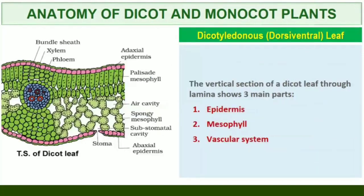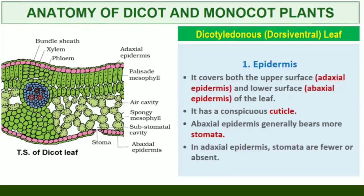Dorsiventral leaf (dicotyledonous leaf): The vertical section of a dorsiventral leaf through the lamina shows three main parts: epidermis, mesophyll, and vascular system. The epidermis, which covers both the upper surface (adaxial epidermis) and lower surface (abaxial epidermis) of the leaf, has a conspicuous cuticle. The abaxial epidermis generally bears more stomata than the adaxial epidermis; the latter may even lack stomata.